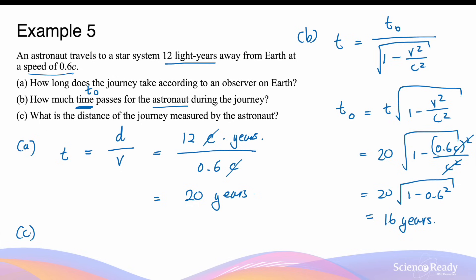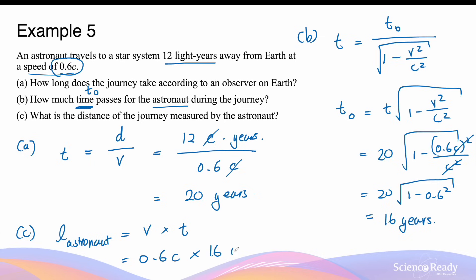Part C: what is the distance of the journey measured by the astronaut? The speed of the spaceship does not change regardless of the observer — whether the astronaut or the Earth observer, the speed remains 0.6c. To find the distance measured by the astronaut, we multiply the speed of the spaceship by the time experienced by the astronaut: 0.6c times 16 years, giving a distance of 9.6 light years.